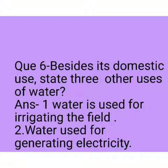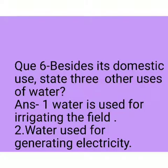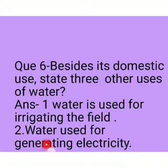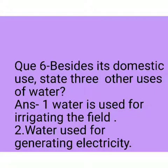Question 6: Besides its domestic use, state three other uses of water. Answer: Water is used for irrigating the fields, and water is used for generating electricity.